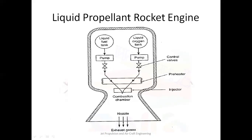The preheated fuel-oxidizer mixture is injected into the combustion chamber through a suitable injector and combustion takes place, producing very high pressure and very high temperature gases. The highly heated products of combustion are then allowed to expand in the nozzle section, where the pressure energy of the gas is converted into kinetic energy, and the gas exits with very high velocity. Due to this high velocity, a thrust force is produced in the opposite direction, which propels the rocket.